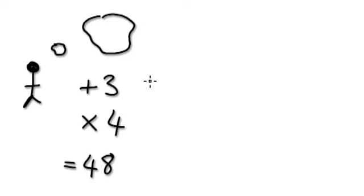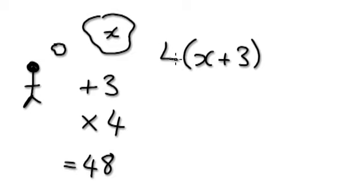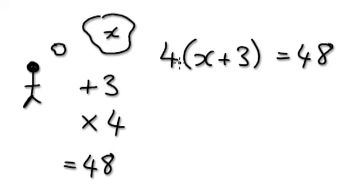What number was I thinking of? So let's say x is the number that I'm thinking of. I'm going to add 3, and then I'm going to multiply it by 4. I know this is weird when you have to use the brackets, and it gives me 48. The reason why you have to use the brackets here is because if you look at this here...